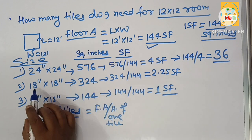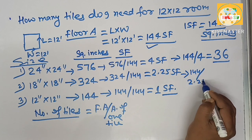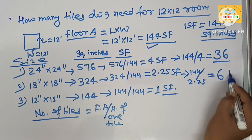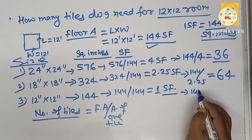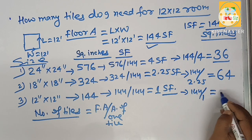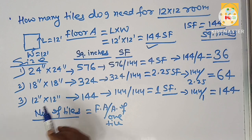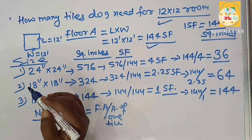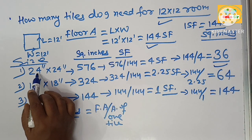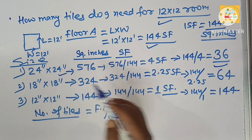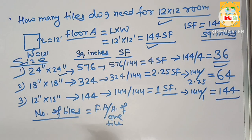If you use 18 by 18 inch tiles, that's 144 divided by 2.25, which comes to 64 tiles. If you use 12 by 12 inch tiles, that's 144 divided by 1 square foot, which comes to 144 tiles. So for flooring a 12 by 12 room, you may need 36 tiles of 24 by 24 inches, 64 tiles of 18 by 18 inches, or 144 tiles of 12 by 12 inches.